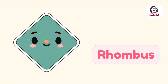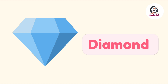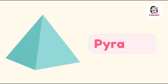Rhombus — rhombus has four sides, one, two, three, four. Diamond — this is a diamond. Pyramid — this is a pyramid.